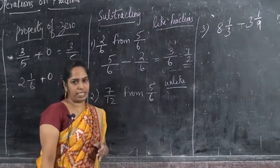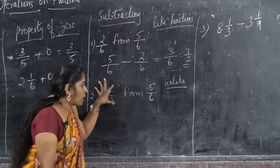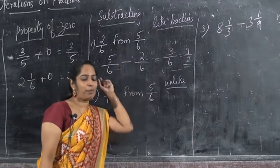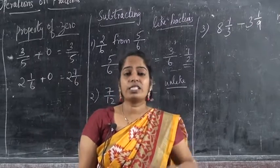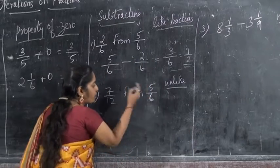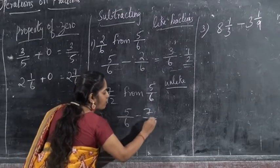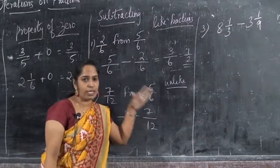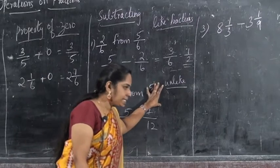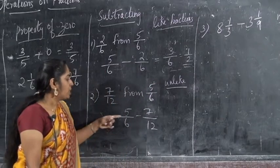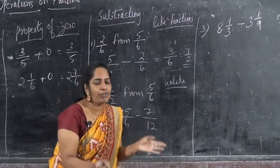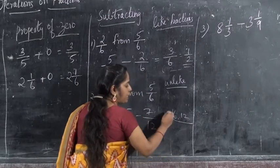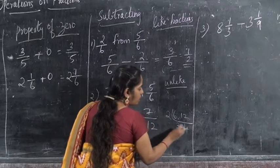Again: 7/12 from 5/6. That means 5/6 minus 7/12. This is an unlike fraction. So denominators are different. We must make the denominators the same. That is 6 and 12. Let's find the LCM: 2 threes are 6, 2 sixes are 12. So the LCM is 12. We have to find equivalent fractions with denominator 12.